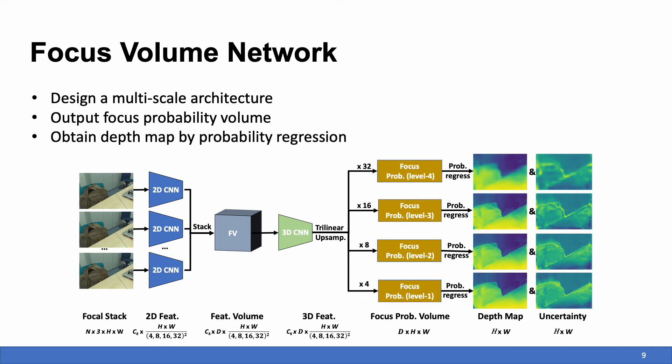It helps our network focus more on the focal analysis. The depth map is finally calculated by probability regression, and the uncertainty map is calculated using the standard deviation.